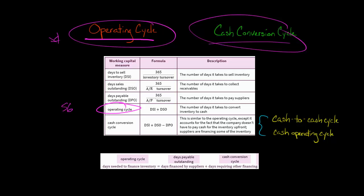So if the operating cycle was 56 days, that means it takes this company 56 days to sell the inventory, bill the customer, and get cash from the customer. This is the number of days it takes to convert the inventory to cash — not just to sell the inventory, but to actually turn the inventory into cash.